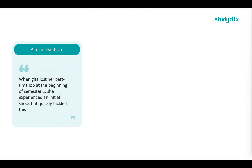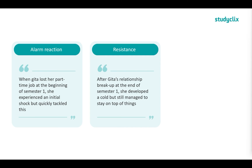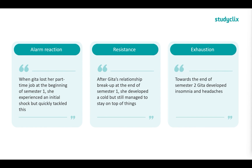Then we can see she moved into resistance: after Jita's relationship breakup at the end of semester one, she developed a cold but still managed to stay on top of things. We know this is resistance because she was still coping — coping better than before. The final stage is exhaustion: towards the end of semester two, Jita developed insomnia and headaches, showing that she was getting sick and her ability to cope had dropped below normal levels.